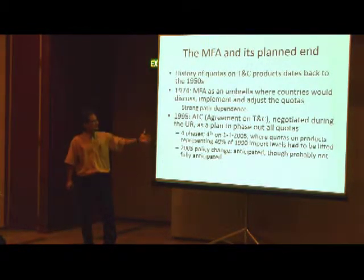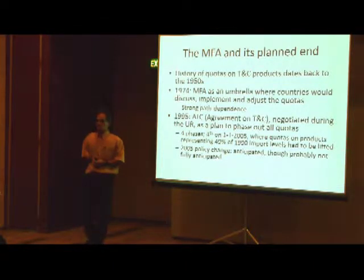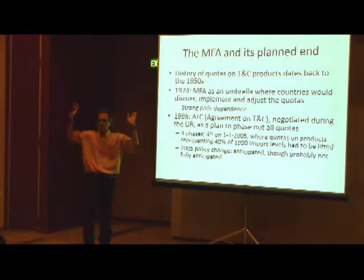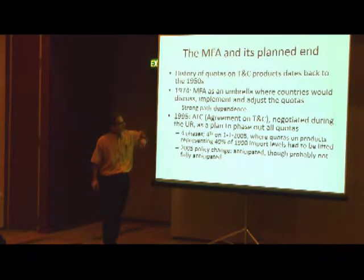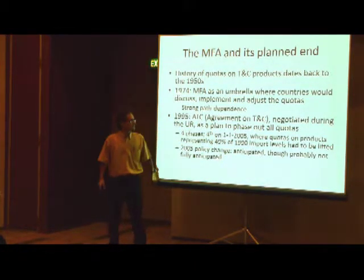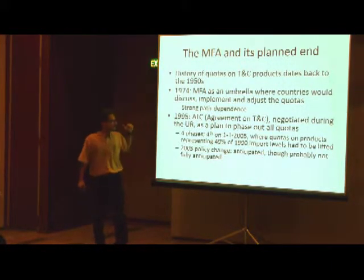In 1995, after the Uruguay Round negotiations, there was an ATC — an Agreement on Textiles and Clothing. The big deal here was that these quotas would have to be phased out. It was a very sensitive sector in several countries. So this started in 1995 and would end only 10 years later. The idea is that any kind of adjustment cost would be smoothed out over this period. There were four phases negotiated in 1994.